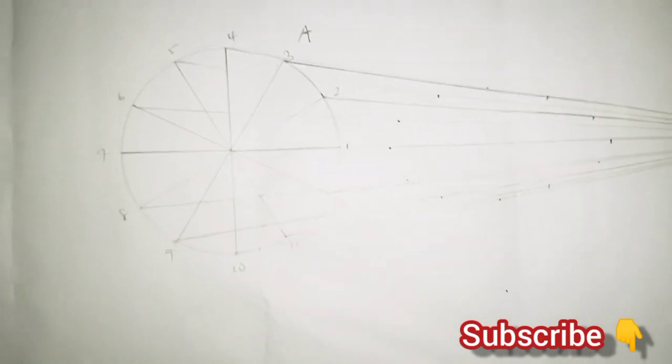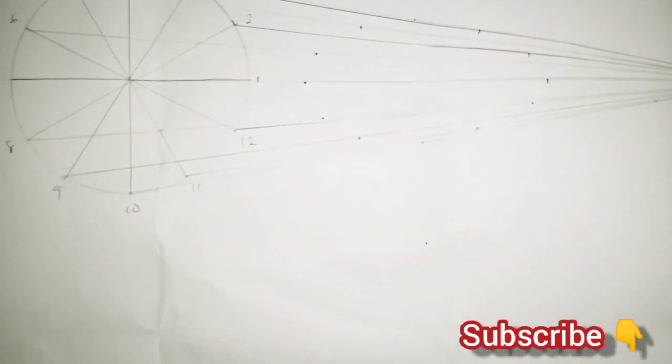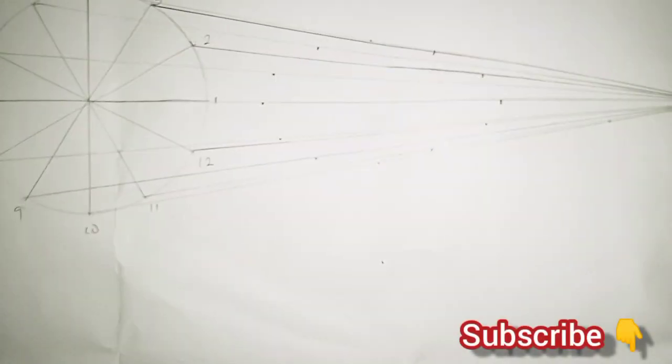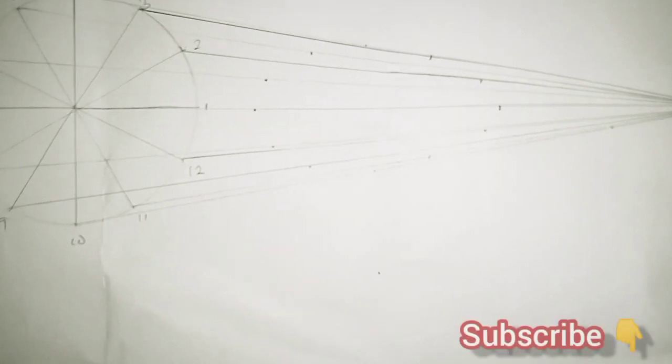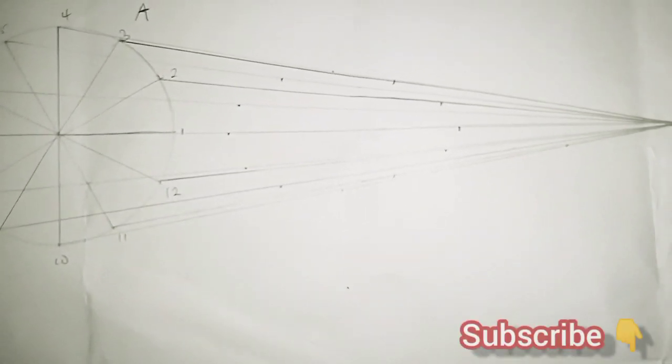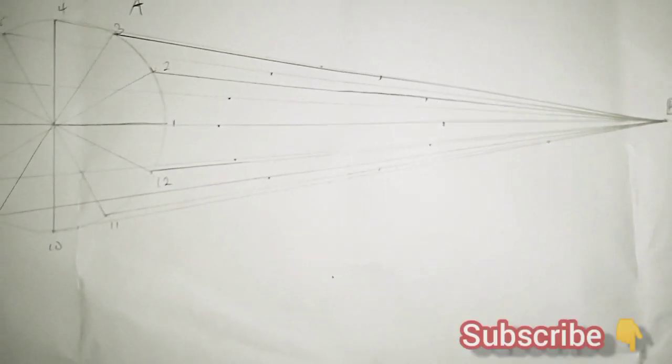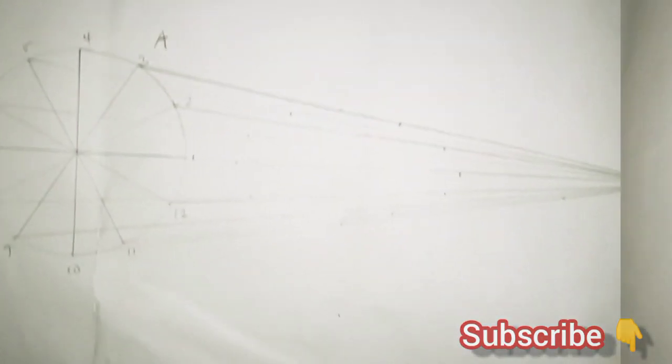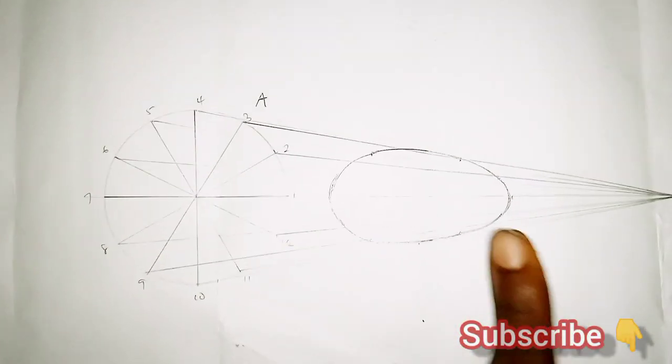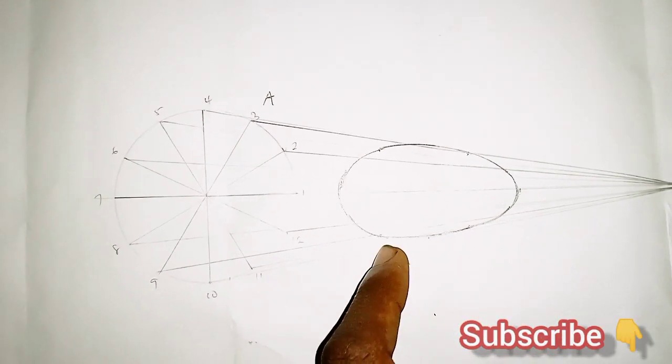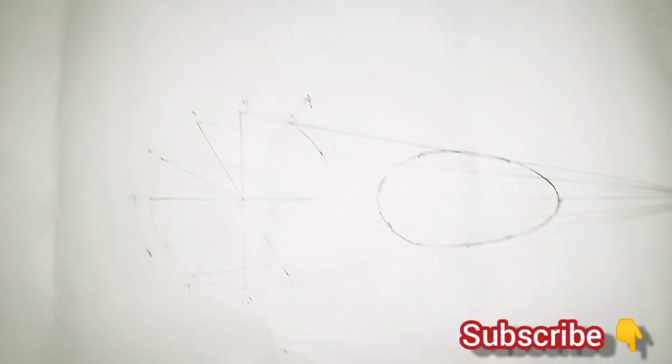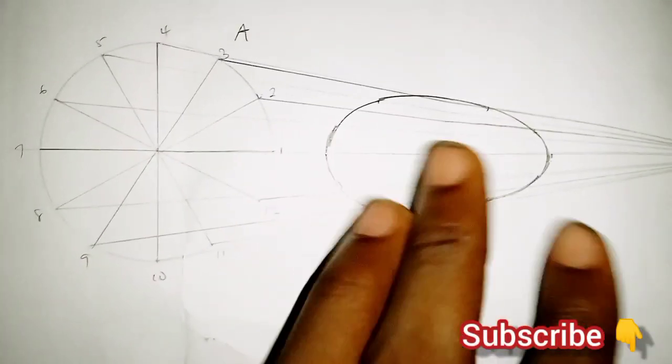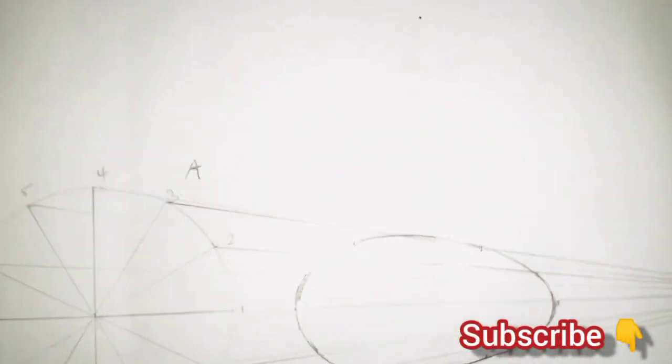After measuring 7.5 centimeters from every point, we got all our locus points. These points look kind of elliptical or circular. With a nice French curve, you join all these points together. I'll be using my hands but it won't be too accurate—I advise you get a French curve. I've joined all my points together, and it gave me this beautiful shape. It looks like an egg.